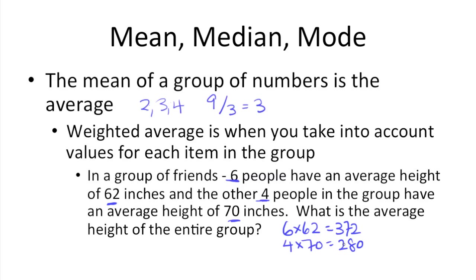The next step here would be to add those 2 subtotals up, which gets you 652, and then divide by the total number of people in the group of 10. And that gets you 65.2, which is the weighted average, or the average of the entire group.